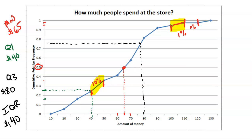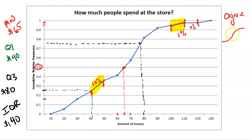Remember, a cumulative relative distribution is always building up — it's always building up. One of the names for these, a nickname, is an ogive — O-G-I-V-E. The reason it's called that is because a lot of times ogives form a nice S-curve — not always, but sometimes. I guess in old Roman or Greek architecture that was something to do with an ogive. So that's where the name comes from.